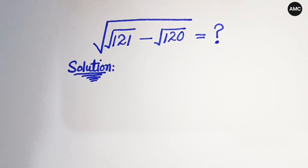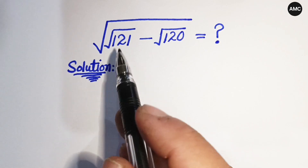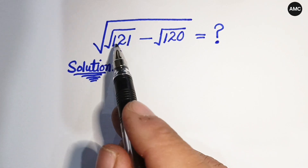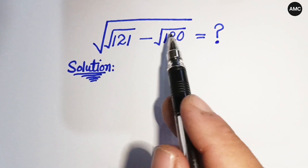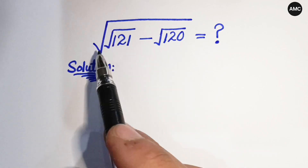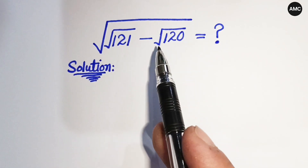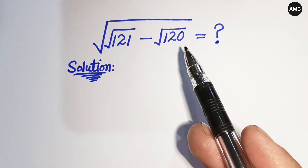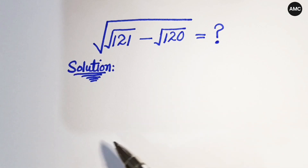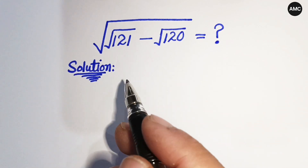Hello everyone, welcome back to Minimals Club. Today we have a nice simplification problem that is actually a tricky exam question. We have to simplify the square root of the quantity square root of 121 minus square root of 120, and we have to find the value of this without using a calculator. Now let's start our solution.